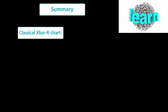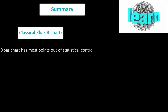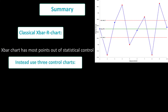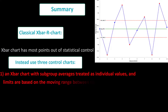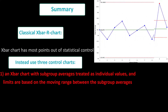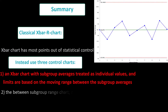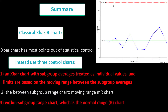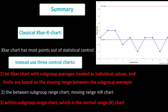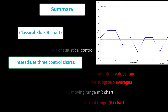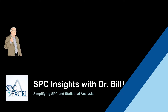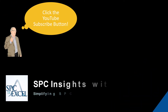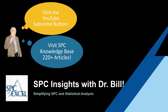In summary: we looked at how the classical X-bar and R chart fails in this special situation, leading to most points being out of control. Instead, we use three control charts — the X-bar chart with subgroup averages treated as individual values and limits based on the average moving range; the moving range chart monitoring between subgroup variation; and the within subgroup range chart, which is the standard range chart from the X-bar and R chart. This is how you handle between and within subgroup variations when they differ.